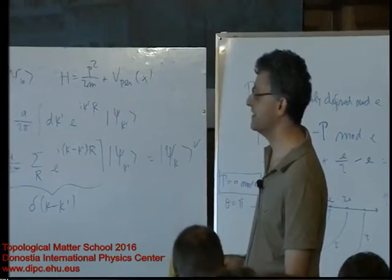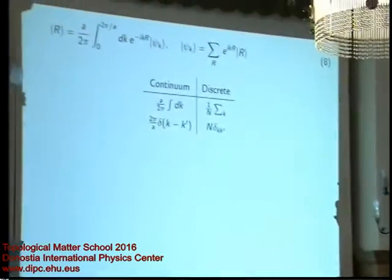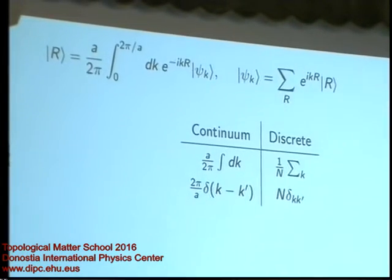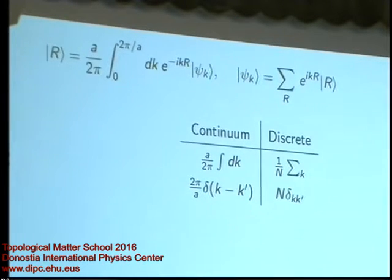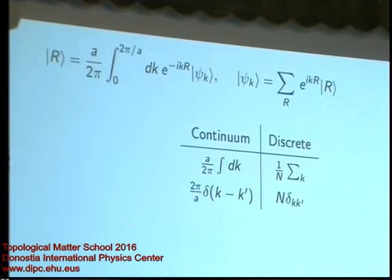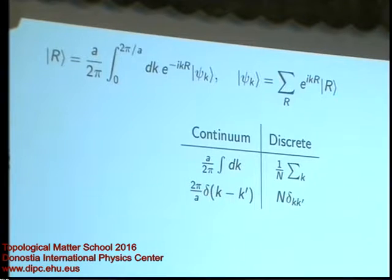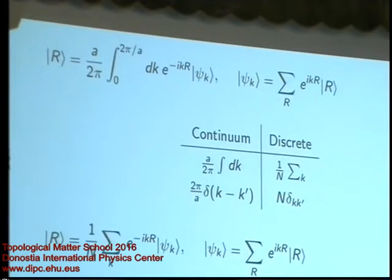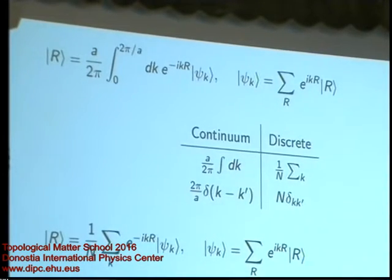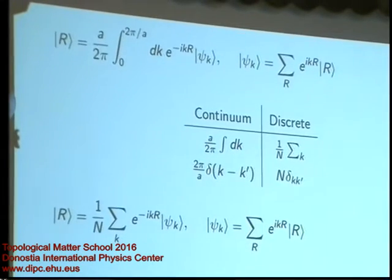Sometimes we want to replace integrations by summations, so we discretize our k-space. I have a little table to remind me of the equivalences, because for certain manipulations it's easier to work in the discrete formulation, for others in the continuum. For example, you can rewrite the relation between the Bloch and Wannier functions in the discrete case.